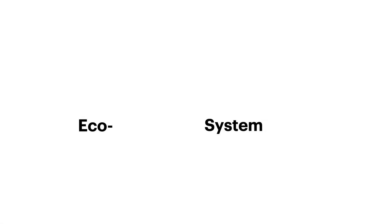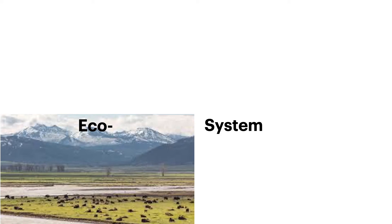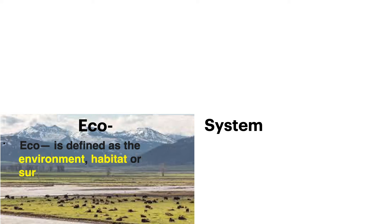I like to break words apart to help us understand them better. "Eco" is a prefix defined as the environment, habitat, or surroundings. An example you've probably heard of is eco-friendly, or ecology — things having to do with the environment.